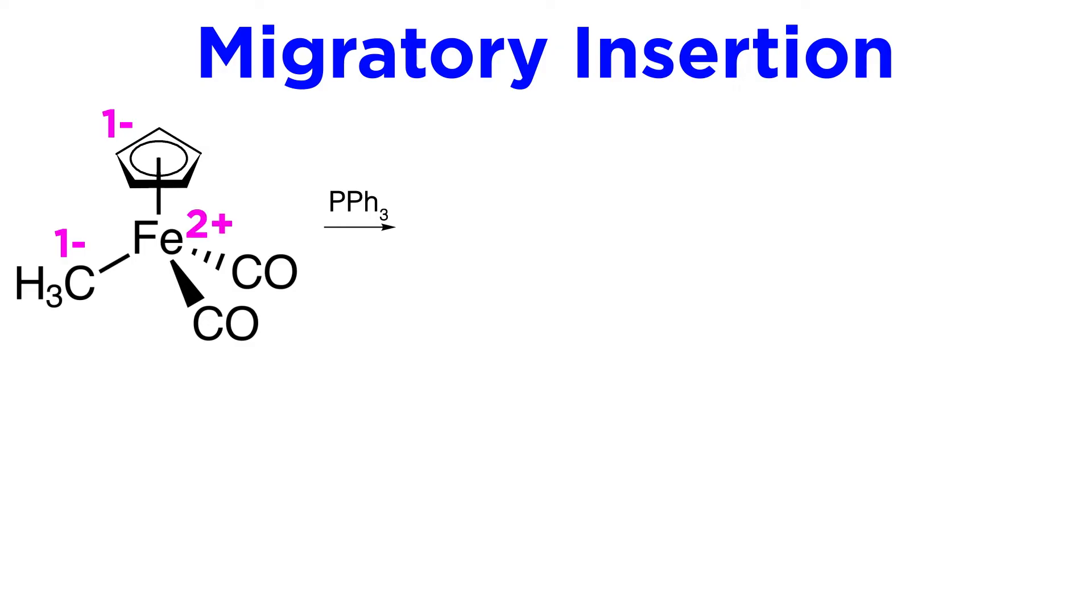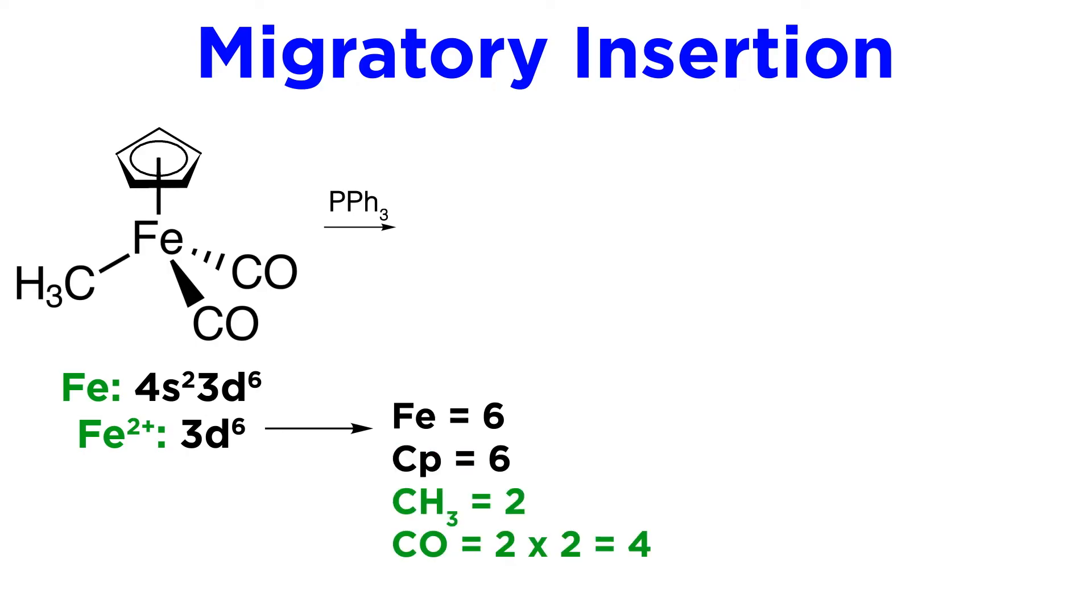And from a ground state of 4s2, 3d6, that leaves us with the six d electrons. Plus the six from the cyclic ligand and two from each of the others, that's 18 electrons. This complex is stable and unlikely to react with the phosphine.